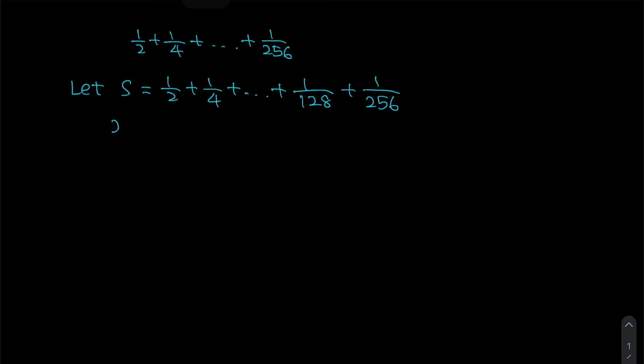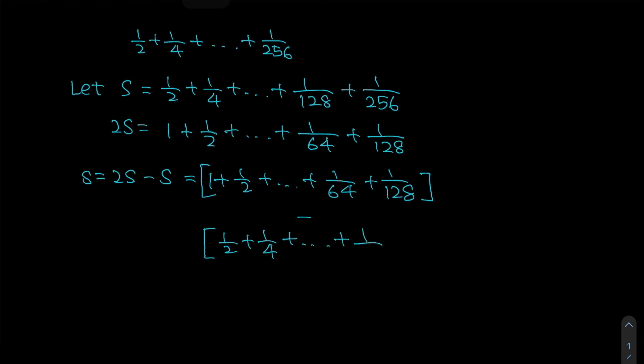Now notice that we can also find everything multiplied by 2. And ultimately, we want to find S. We can also say that S is equals to 2S minus S, which is the same as one plus half plus until one over 64 plus one over 128. This is 2S, and I need to minus S, and S is, we have defined it to be half plus one quarter plus until one over 128 plus one over 256.